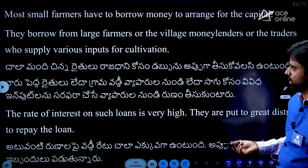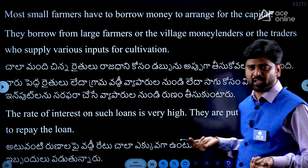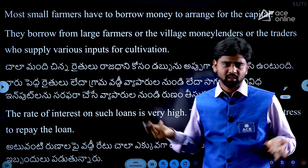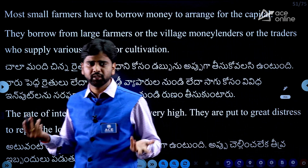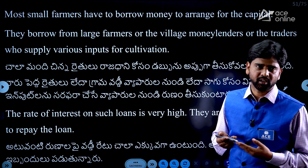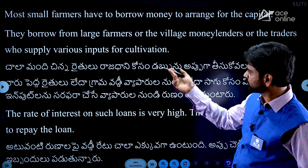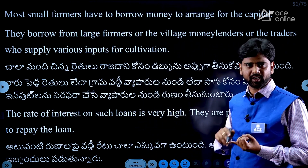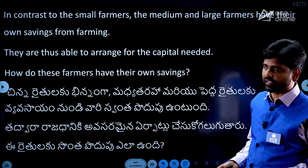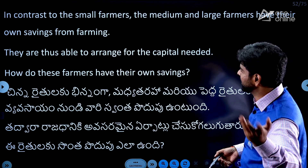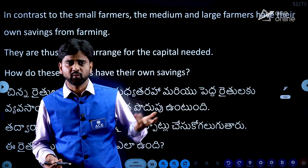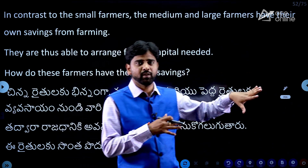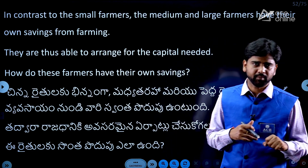Small farmers don't have enough money, so most small farmers have to borrow to arrange money for capital. Poor farmers and marginal farmers turn to moneylenders. In contrast, medium and large farmers have their own savings from farming activities and are able to retain their resources.